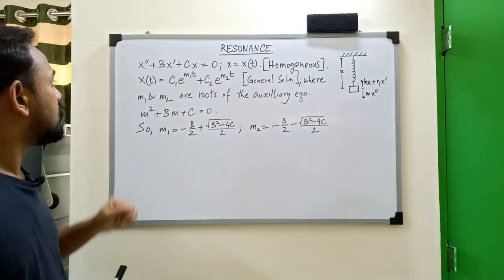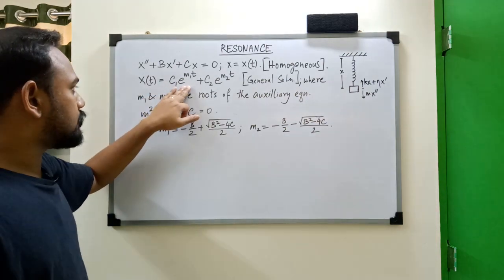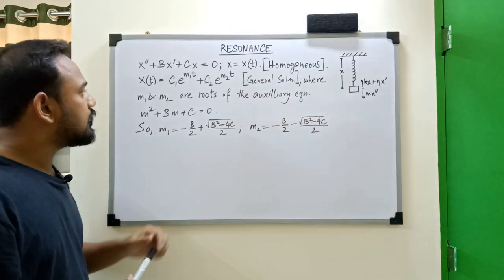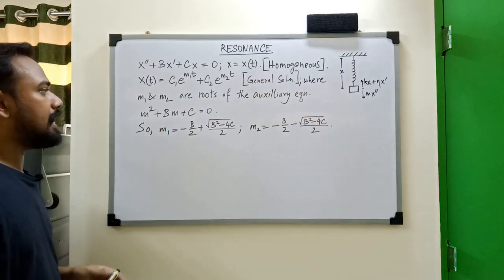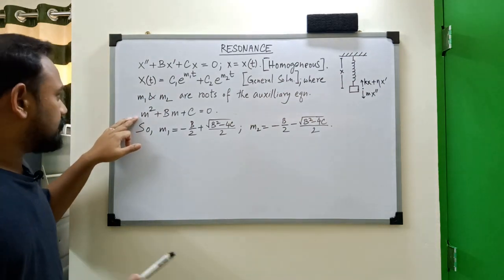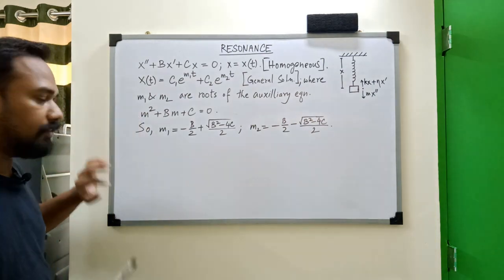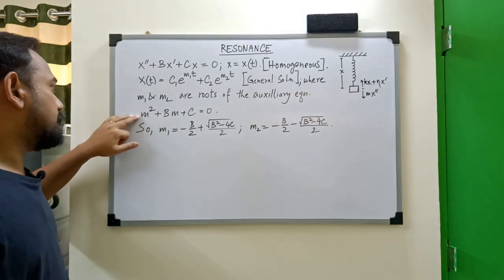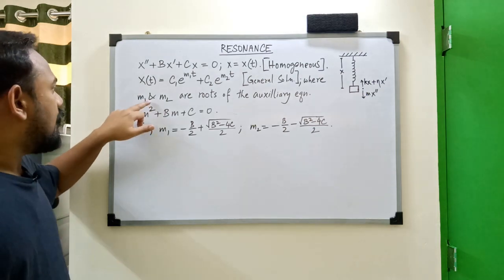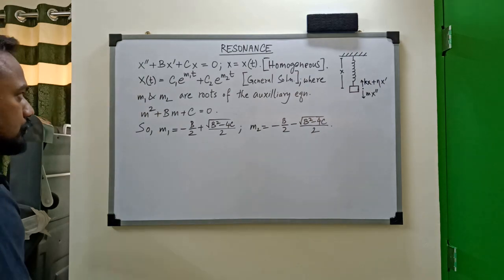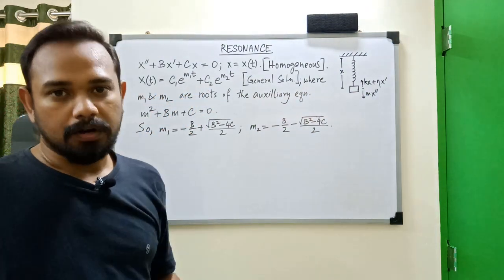As we learned in previous videos, the general solution of this differential equation is x = c1 e^(m1 t) + c2 e^(m2 t), where m1 and m2 are the roots of the auxiliary equation. The auxiliary equation is obtained by replacing x double prime with m², x prime with m, and x with 1, giving a quadratic in m. The constants c1 and c2 depend on the specific problem you are dealing with.